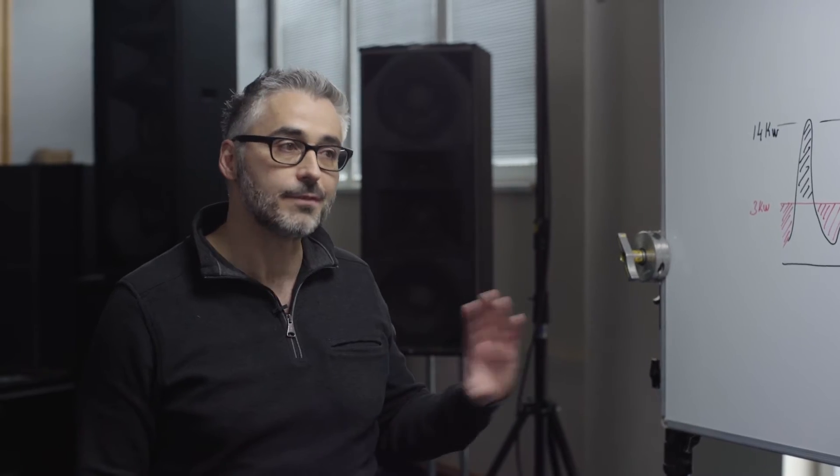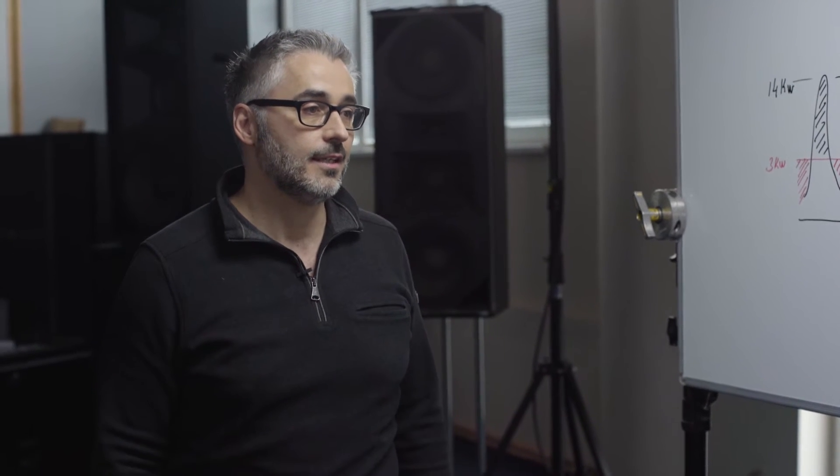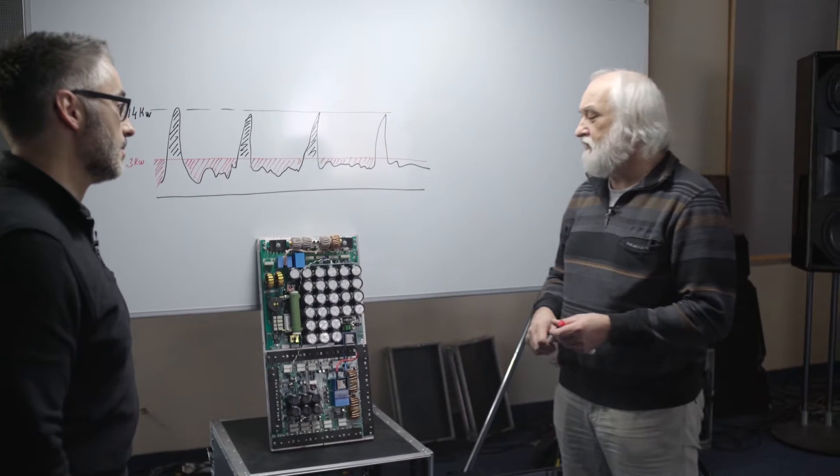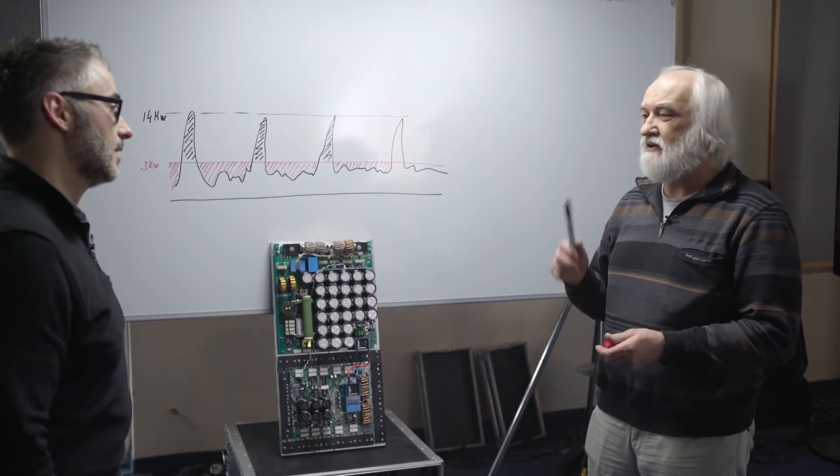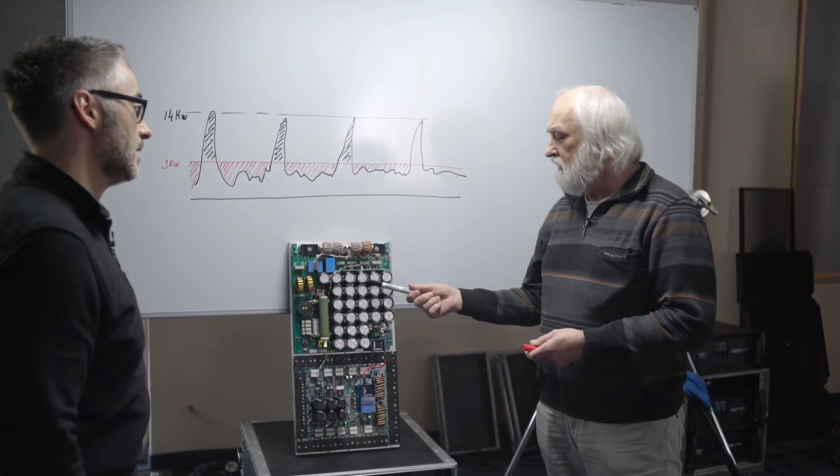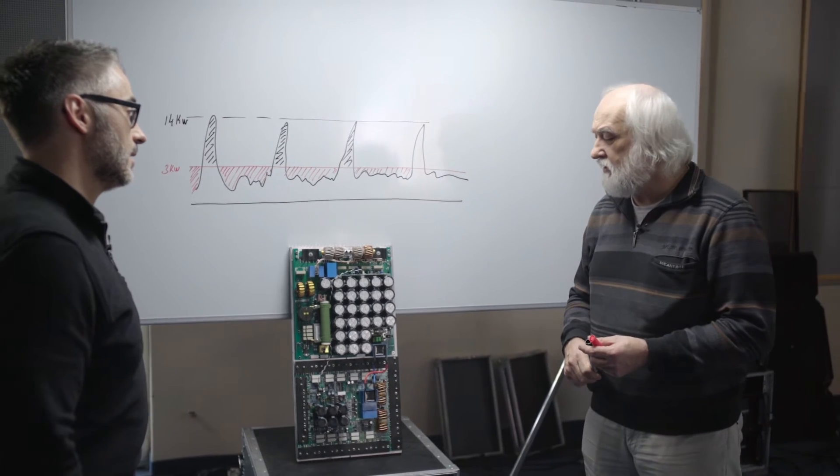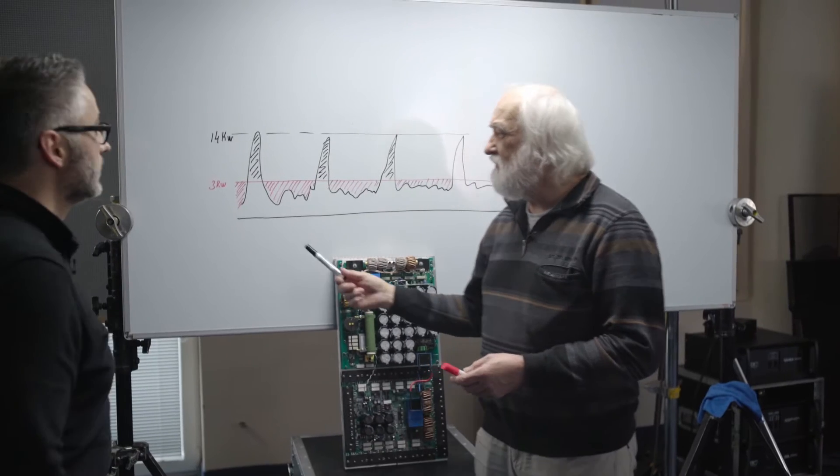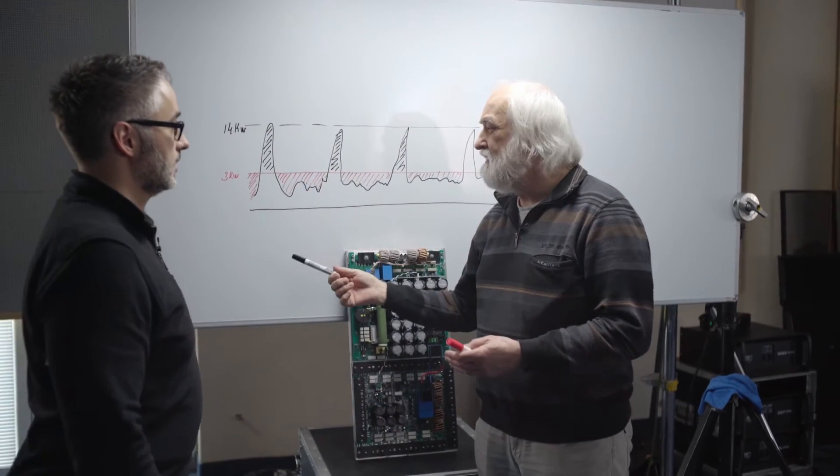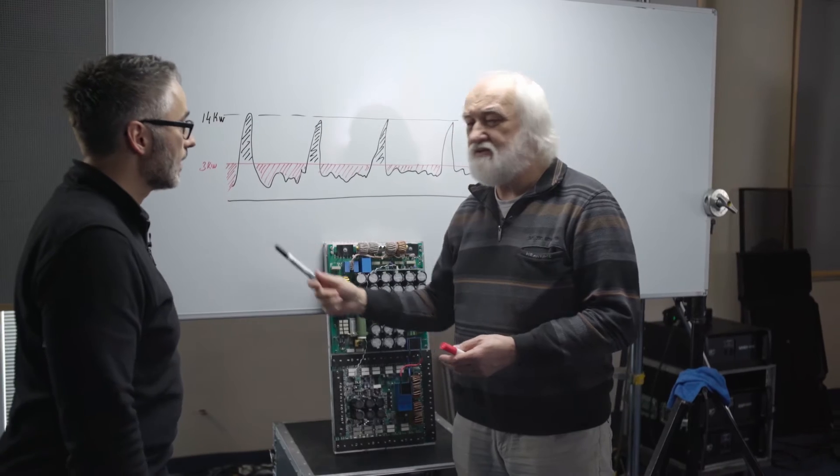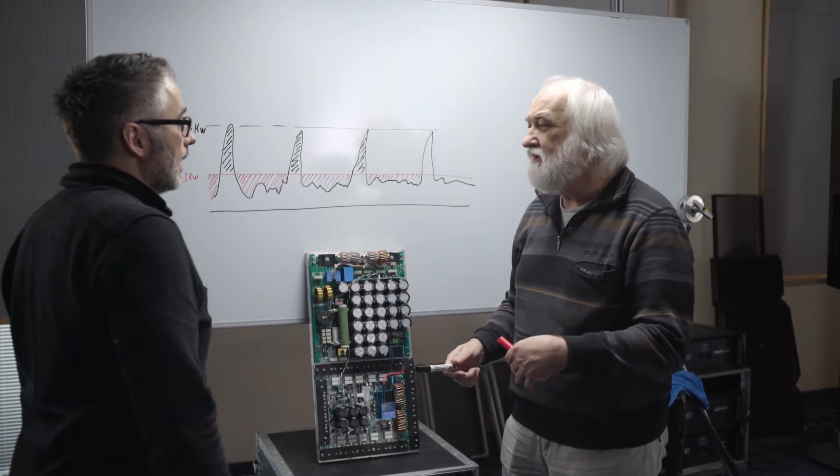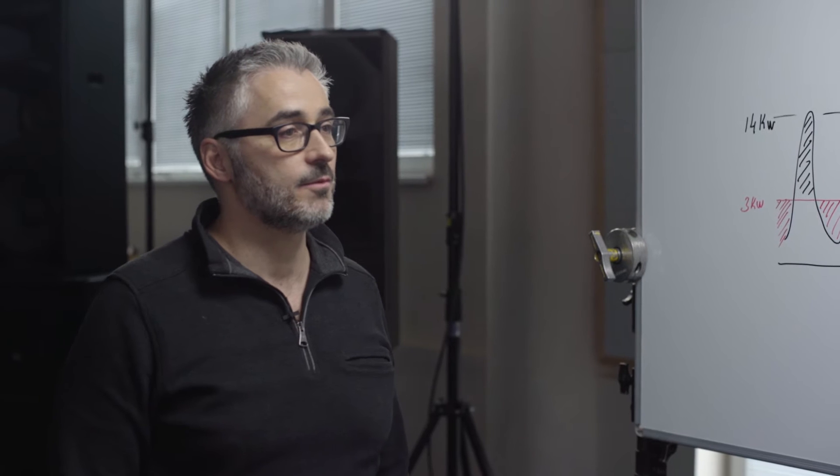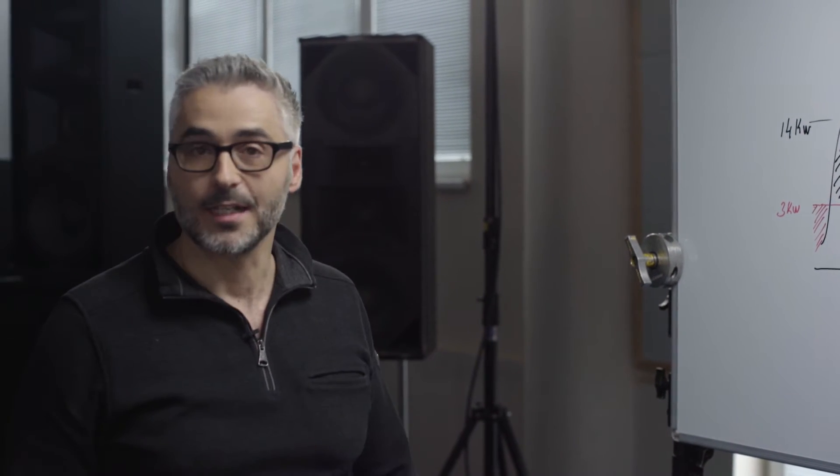So you're saying we have different amplifiers for each section? Here for example we have an amplifier which runs a 421. It delivers 6 kilowatt into 2 ohms. The peak is up to 14 kilowatts. Lots of people will say how you can get 14 kilowatts peak when you have only 3 kilowatts from the line.